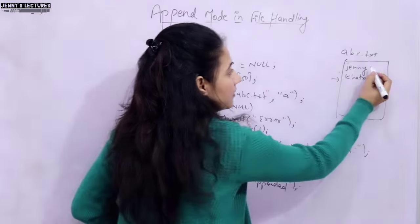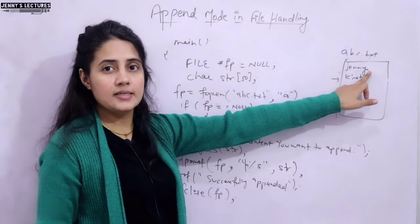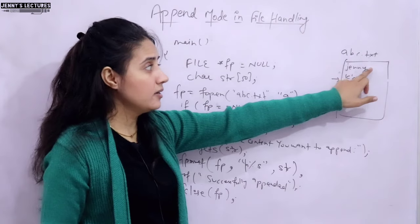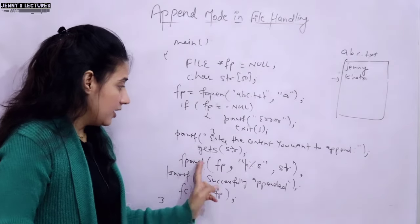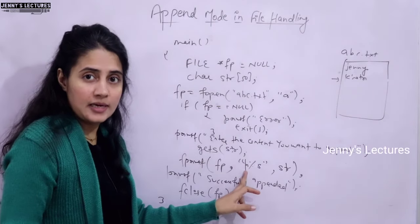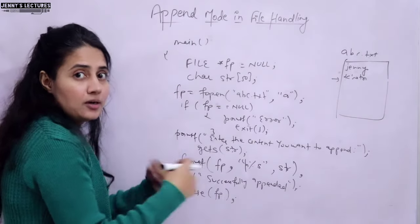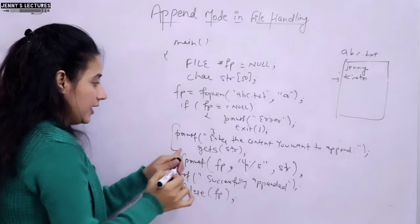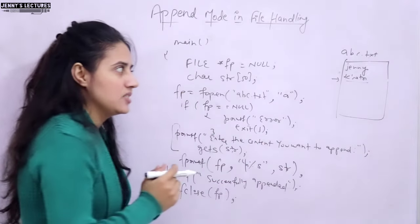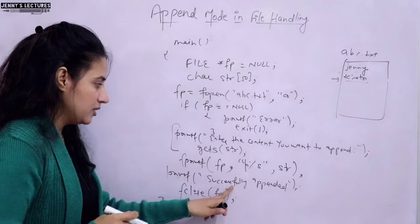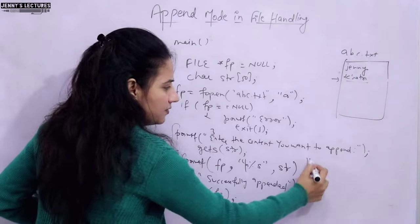When fopen opens the file in append mode, the cursor is automatically placed at the end of the existing file. From there, the new content is appended. With '\n' in fprintf, the cursor moves to a new line and whatever is in str — the user's input — gets appended on the next line. Successfully appended will print on screen.